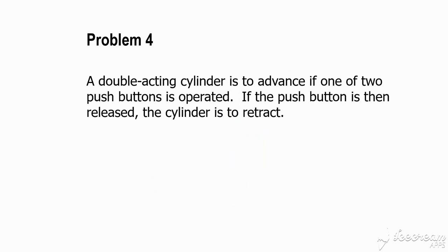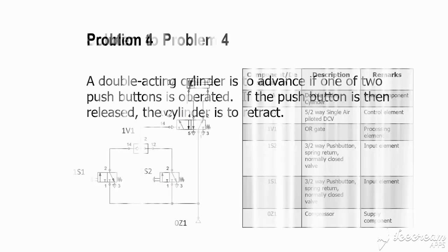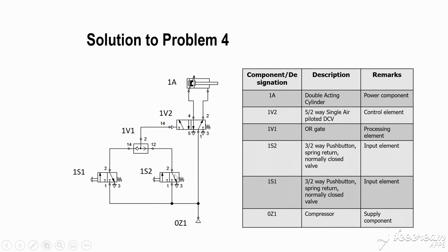Problem 4: A double acting cylinder advances if any one of two push buttons is operated; when the push button is released, the cylinder retracts. Since either push button should work, an OR gate valve is required. Two push buttons (1S1 and 1S2) feed into an OR gate valve (1V1). When either push button is pressed, the signal passes through the OR gate to activate the 5x2 valve and extend the double acting cylinder.